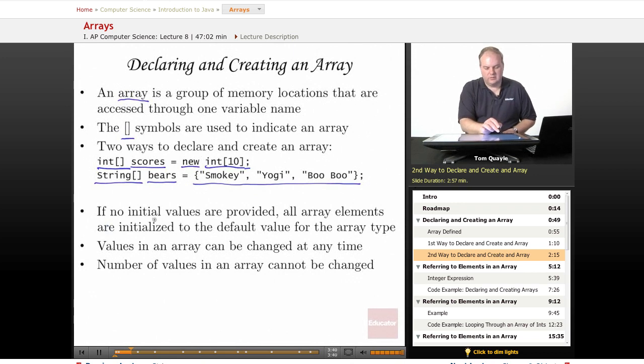If no initial values are provided, all array elements are initialized to the default value for the array type. So if I have an array of a numeric type, such as int or double, the default value would be 0. And if I do not provide a set of initial values, this array of 10 integers called scores would be prefilled with all zeros. For strings, if I don't provide a list of initializing values, then the default value for a string is the empty string, which is simply a string of length 0.